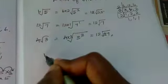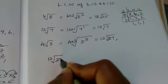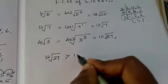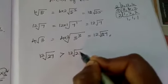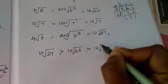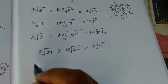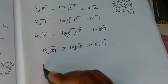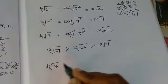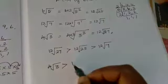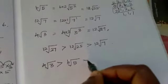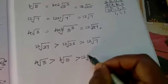Now, which number is greater? 12 root 27 is greater than 12 root 25, which is greater than 12 root 7. Which number comes first? 4 root 3 is greater than 6 root 5, which is greater than 12 root 7. This is the answer.